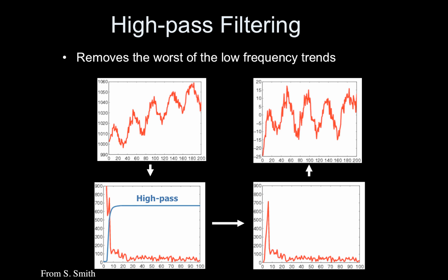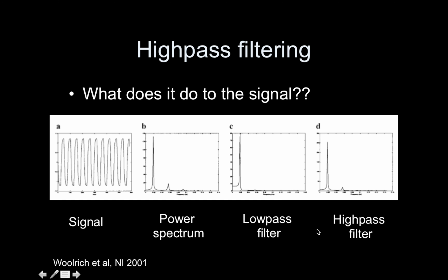So the high-pass filtering removes the worst of the low-frequency trends. Here's a really dramatic linear increase — you high-pass filter it and it's fixed. Time series on top, frequency domain on bottom. It's important to think about what these filtering strategies do to your signal. So here's a block design — the assumed signal that would be produced, and its power spectrum. If you low-pass filter, the signal is fine. If you high-pass filter, the signal is fine as well. So block designs are generally fine with both types of filters.